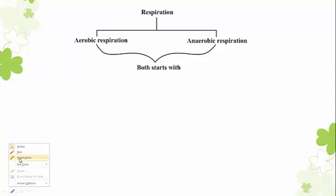Respiration is of two types: aerobic respiration and anaerobic respiration. In aerobic respiration, oxygen is utilized, and in anaerobic respiration, oxygen is not utilized. Aerobic respiration is characterized by complete oxidation of the glucose molecule, while in anaerobic respiration the glucose molecule is incompletely or partially oxidized. When glucose is completely oxidized it produces more energy; when partially oxidized, less energy is produced.